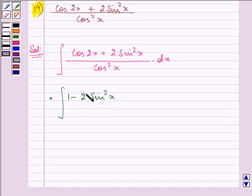Right? So 1 minus 2 sin squared x plus 2 sin squared x divided by cos squared x dx.